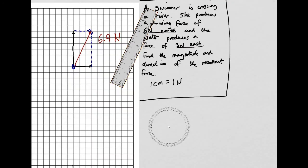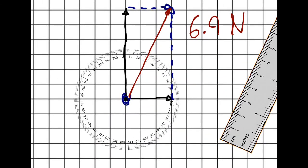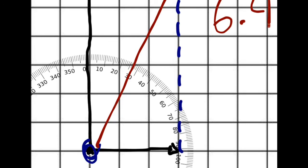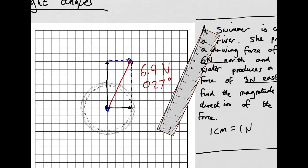Now let's use the protractor to see what the direction is. It looks like about 27 degrees, so that's a bearing of 027 degrees.